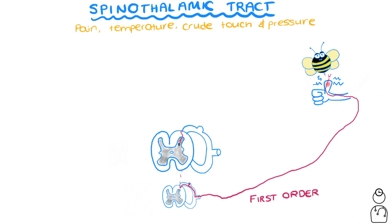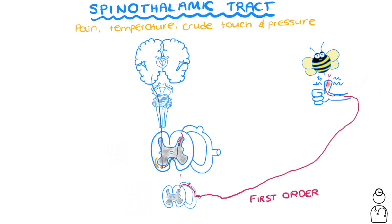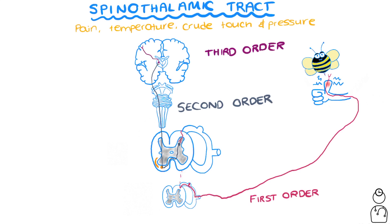The second neuron arises and actually decussates within the spinal cord through an area of white matter called the ventral white commissure. Once it crosses, it hitches onto the correct spinothalamic highway up to the brain. This nerve doesn't actually synapse in the brainstem, but goes straight up to the VPL of the thalamus to synapse — this is the second-order neuron. Finally, the third-order neuron goes from the VPL to the hand part of the sensory cortex.